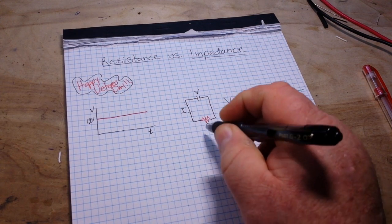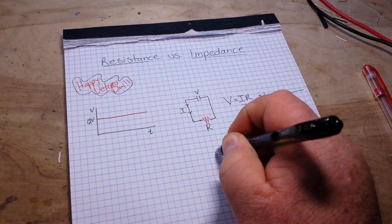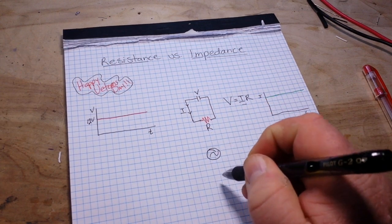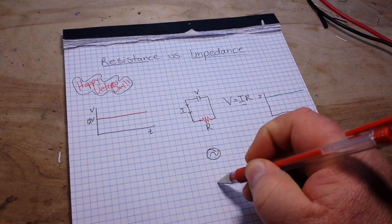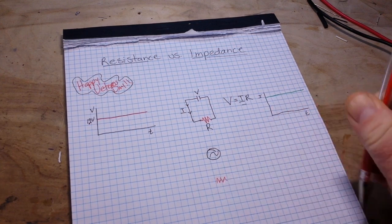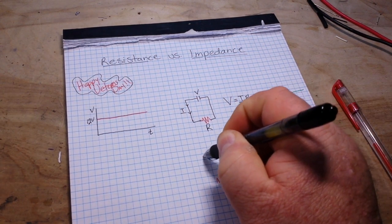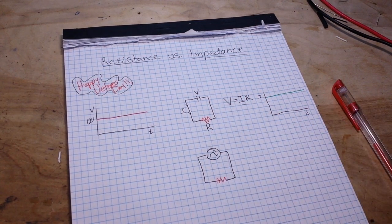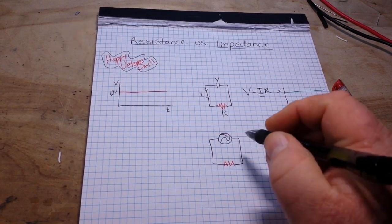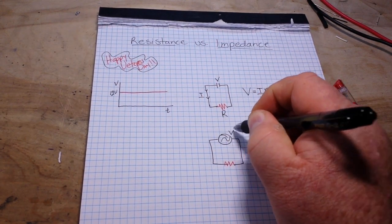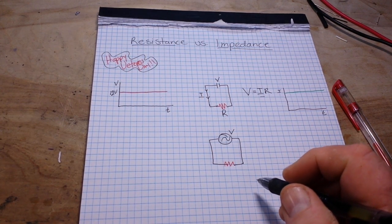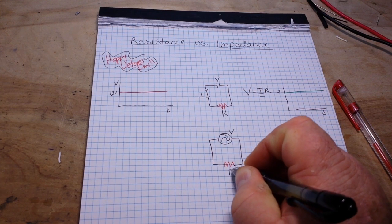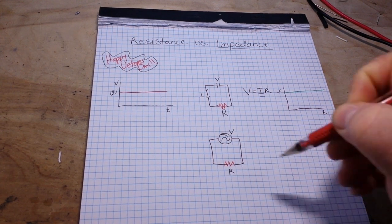Now let's take our circuit here, and instead of a 12-volt battery, we will put in an AC current source. Okay? So our AC current source will output a voltage of V, and our resistor will still give us a resistance of R.